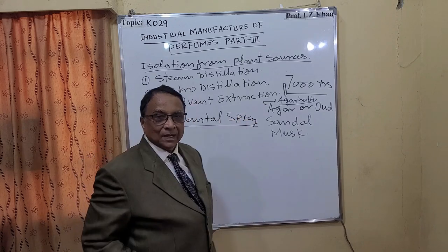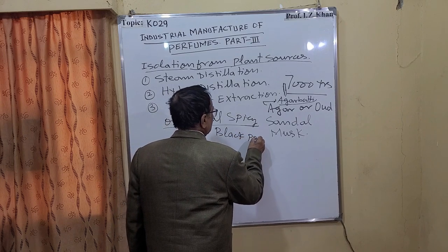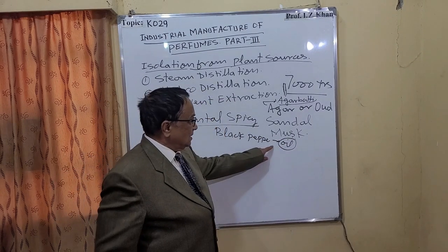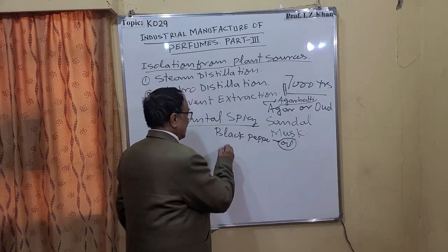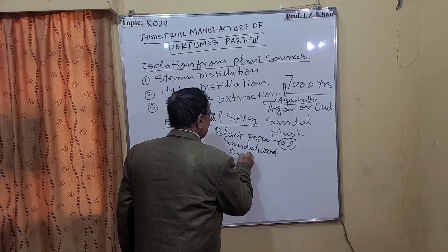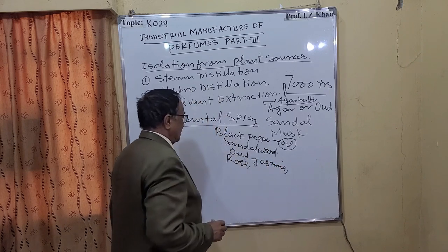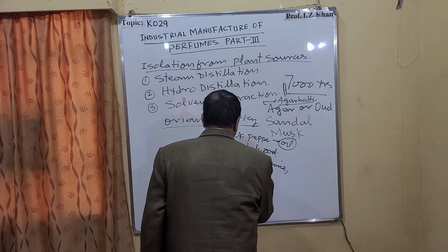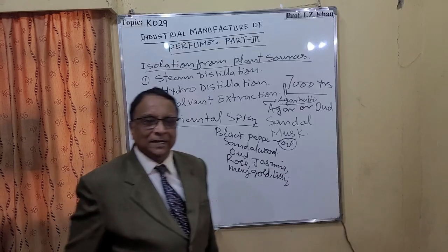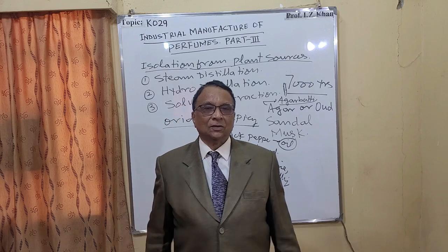The king of spices I call is black pepper, and black pepper essential oil is among the most costly essential oils. Then there is sandalwood oil, wood oil, rose, jasmine, and others like lily. There are so many plant parts and flowers that are widely used to extract essential oils.